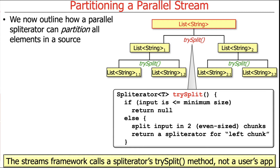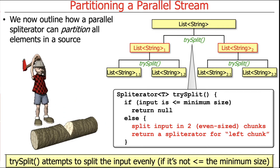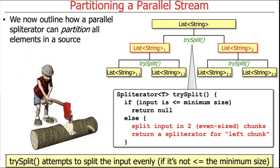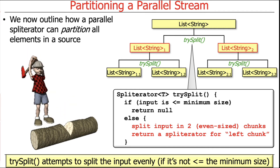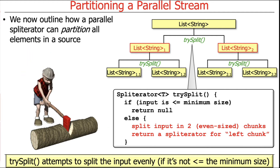trySplit is called internally by the Java streams framework when you do a parallel stream — it's not something you typically call yourself. What it does is take the input, and if it's big enough to be split, the spliterator will split it into two chunks. Ideally it tries to split things evenly — so with 100 elements it might split into 0–49 and 50–99. It updates the current object to cover the right-hand side and returns a new spliterator covering the left-hand side.